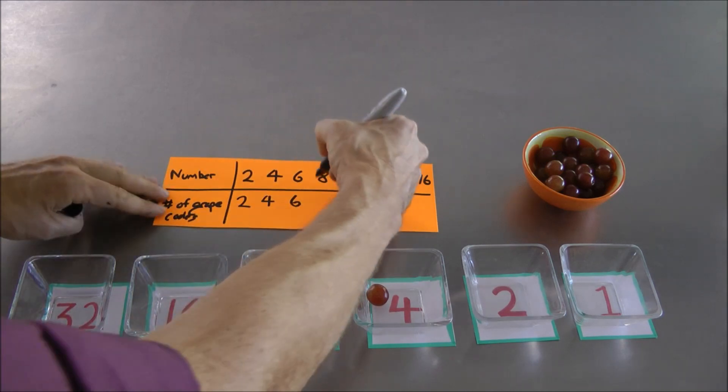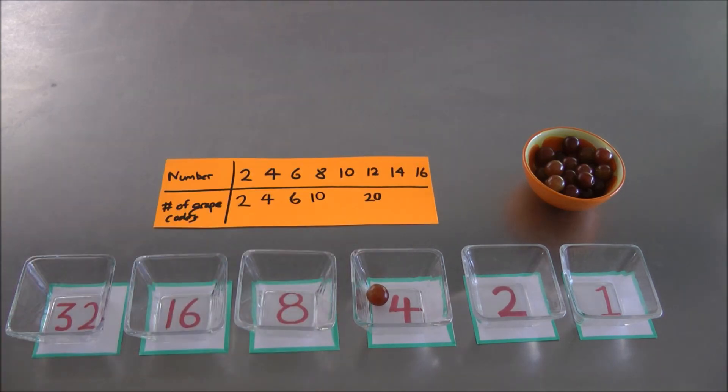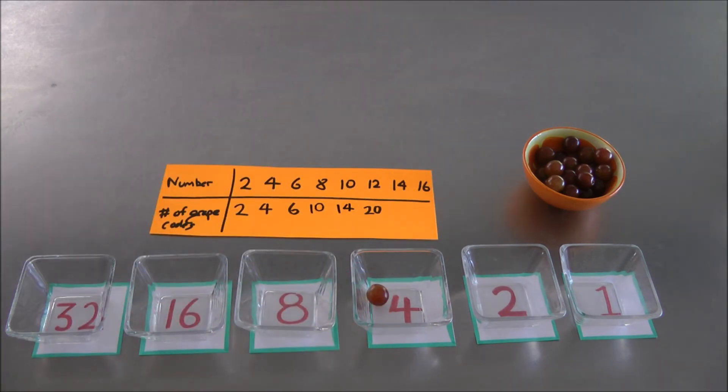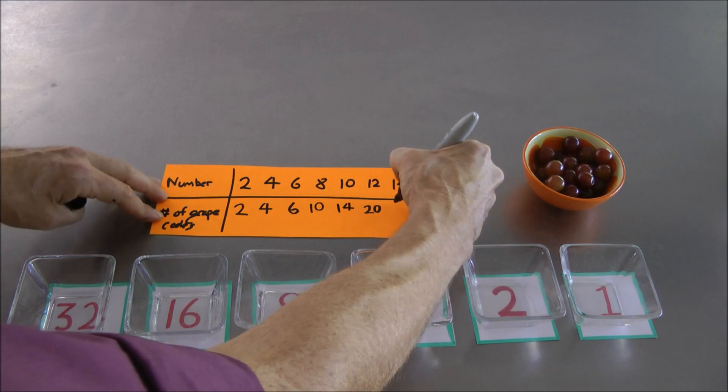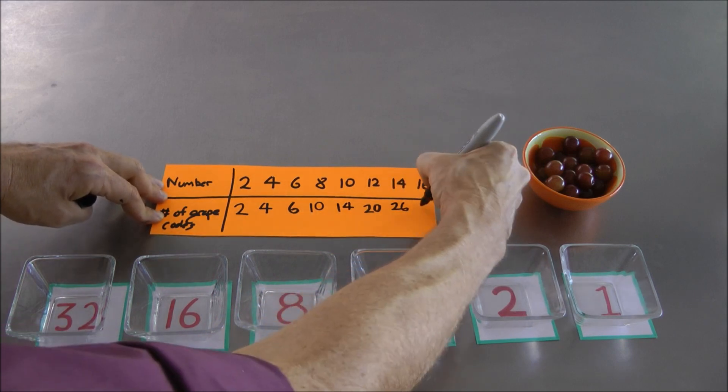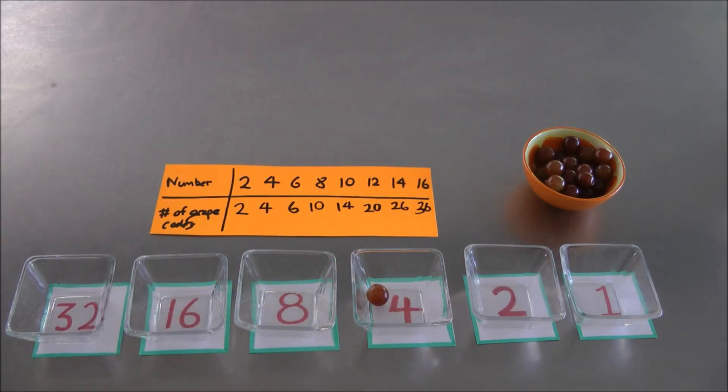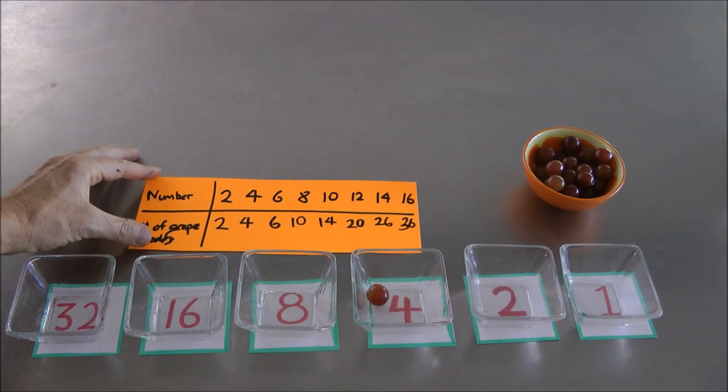So it turns out there are 10 different grape codes for the number eight. It turns out there are 14 different grape codes for the number 10. I did 14 as well. It turns out there's 26 of those. And there's 36 ways to represent the number 16. My handwriting's a bit scrawly there. Hopefully you can see that okay.